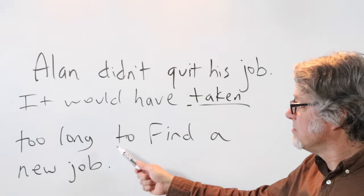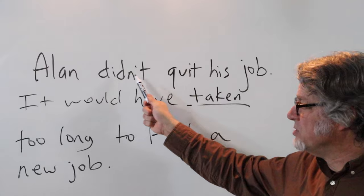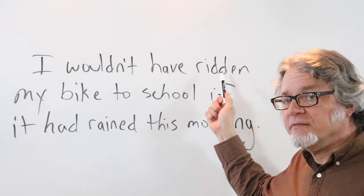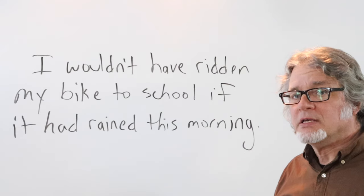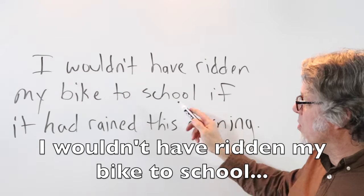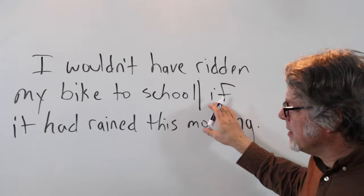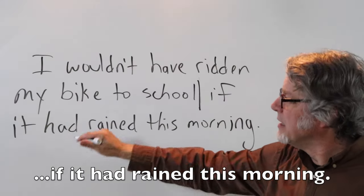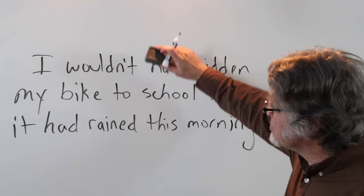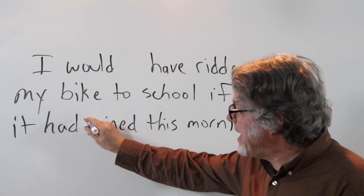And this is what would have happened but didn't, because the person didn't do this. 'Would have' plus the main verb is used in past conditional sentences. This is in two parts. For example: I wouldn't have ridden my bike to school — and this actually did happen — and then starting with 'if': if this condition occurred, then this wouldn't have happened. I can change this: I would have ridden my bike to school if it had not rained this morning.